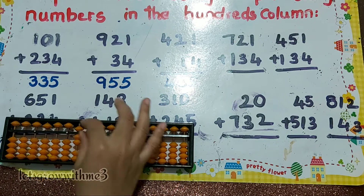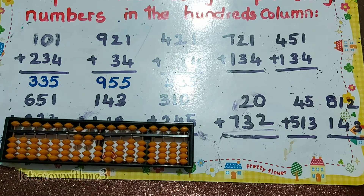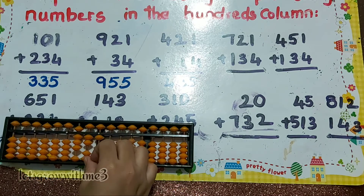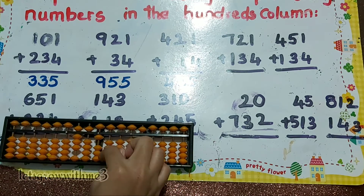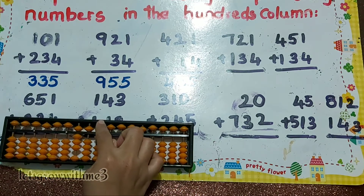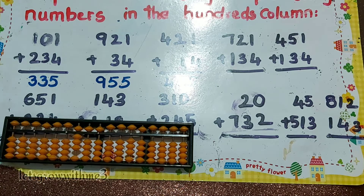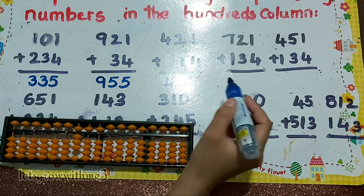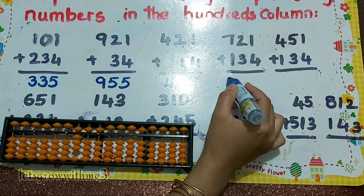Next one: 721 plus 103. How to add 3 — plus 5 minus 2. And how to add 4 — plus 5 minus 1. So our answer is 855.